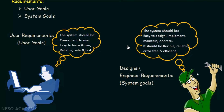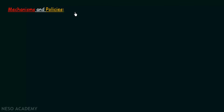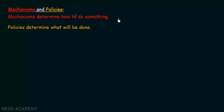Now let us understand the mechanisms and policies involved. Mechanism determines how to do something, while policy determines what will be done. Mechanism is about how a particular thing has to be done, and policy is about what will actually be done.